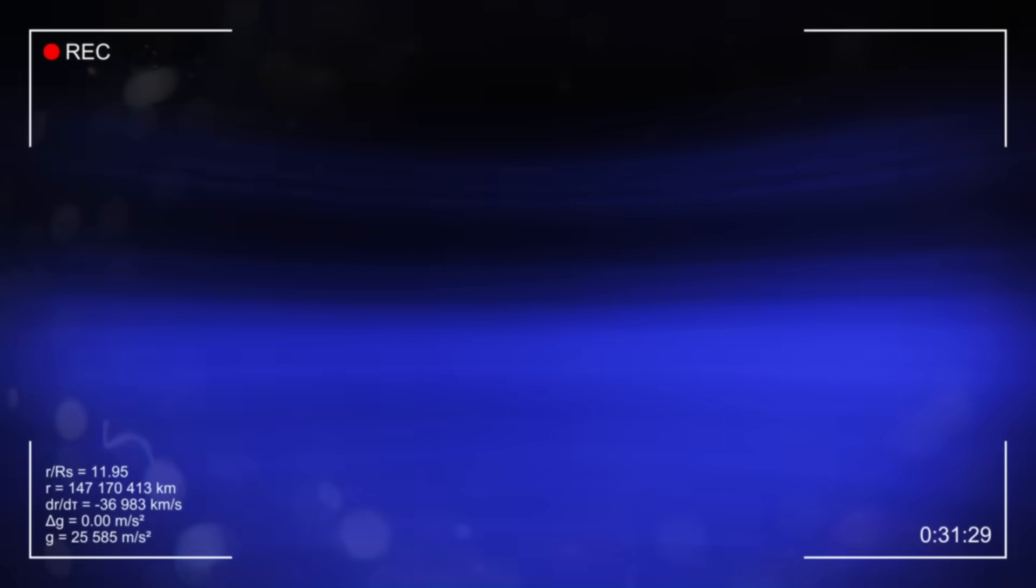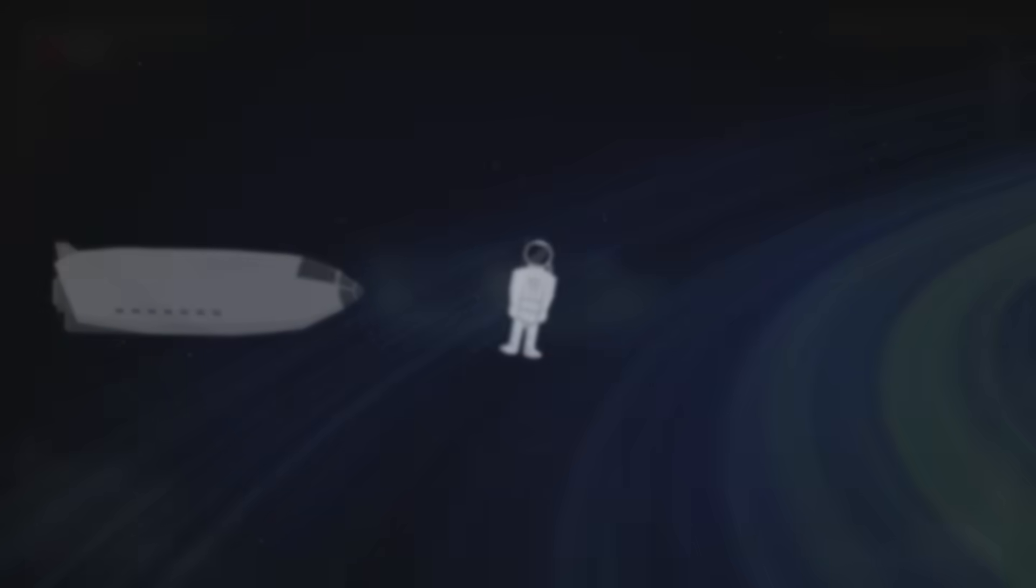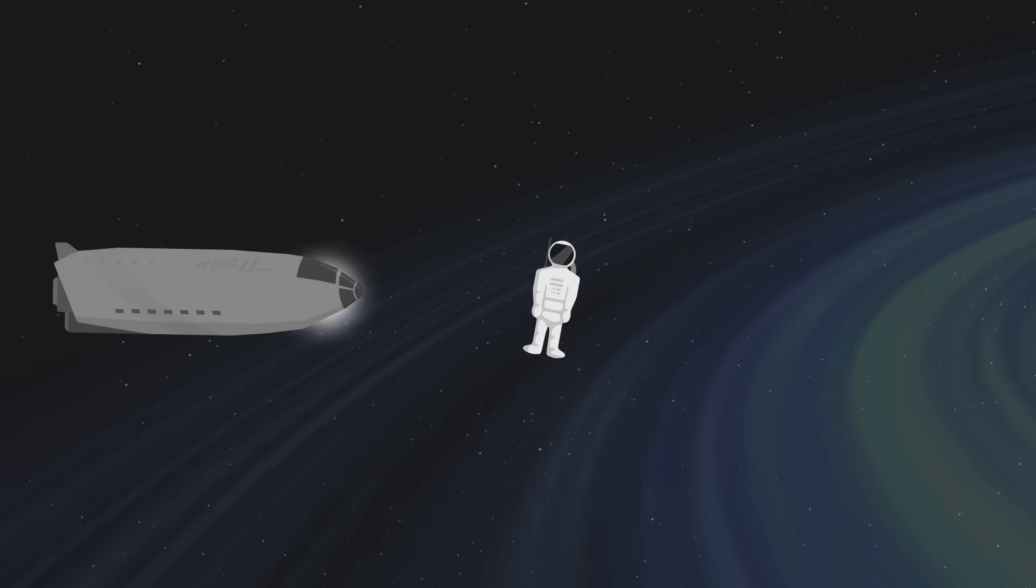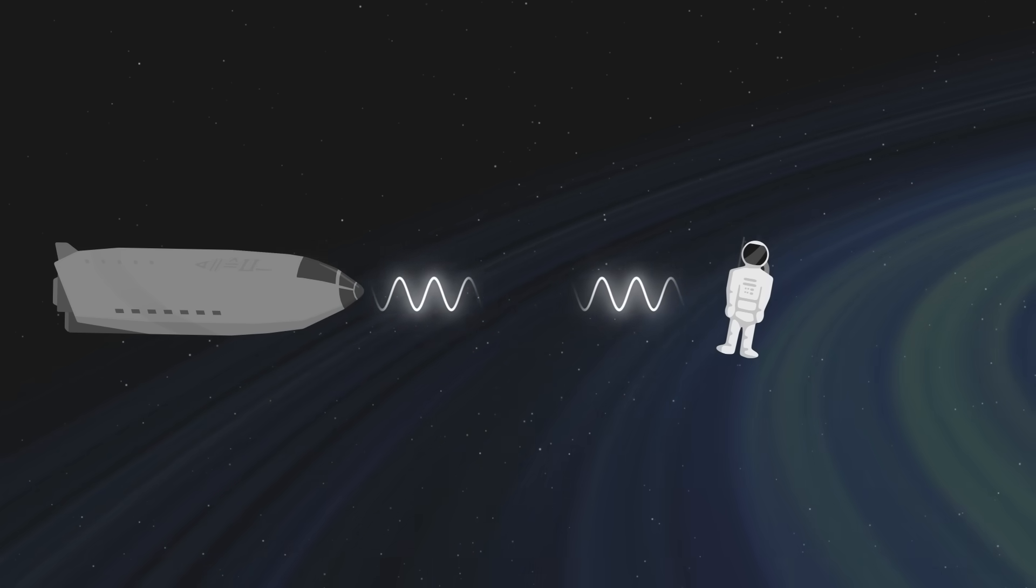If we turned around, we would notice that the clock inside the spaceship seems to be running slower than before. The effect is subtle, but still noticeable. This is also due to the Doppler effect. If we imagine that the clock emits a signal each second, these signals take longer and longer to reach us, and we thus observe the ticking in slow motion.